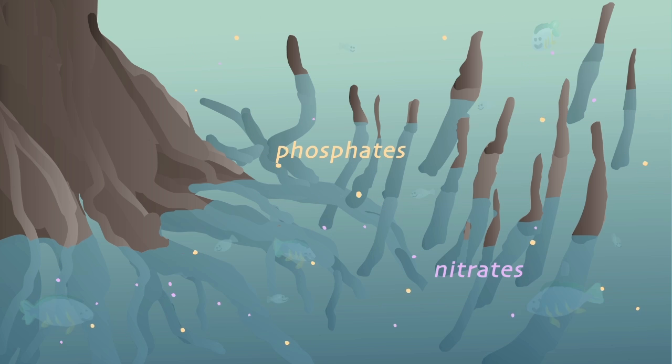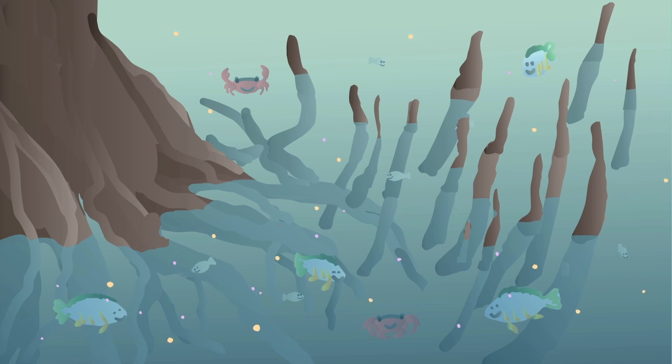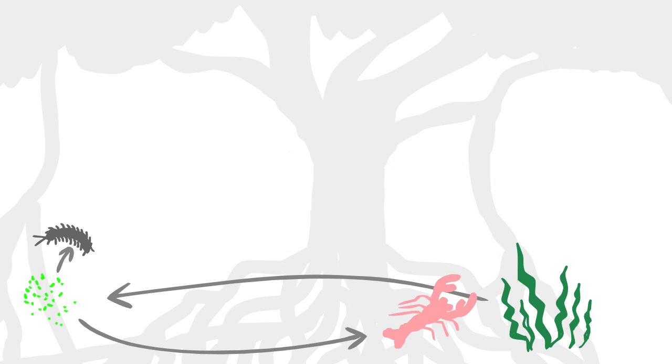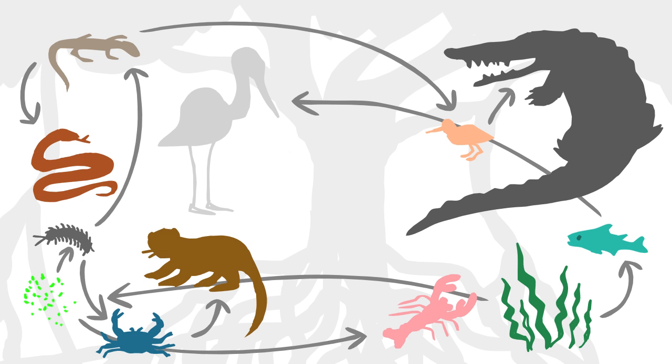Hidden from predators, it makes an ideal breeding ground for fish and crustaceans. As a result, mangroves are among the most productive ecosystems on Earth.